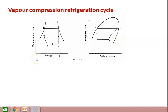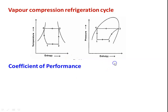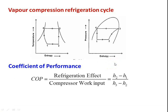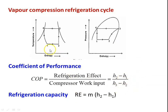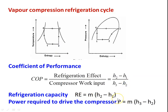In the vapor compression cycle, we calculate the COP (coefficient of performance), defined as refrigeration effect divided by compressor work input. The refrigeration effect is Q = H2 − H1, and compressor work input is W = H3 − H2. Refrigeration capacity is m(H2 − H1), and power required to drive the compressor is P = m(H3 − H2).